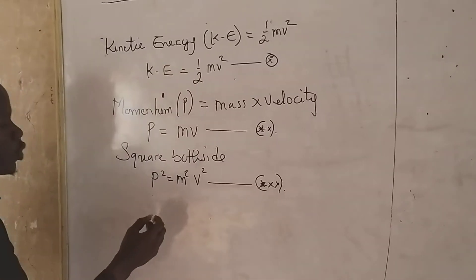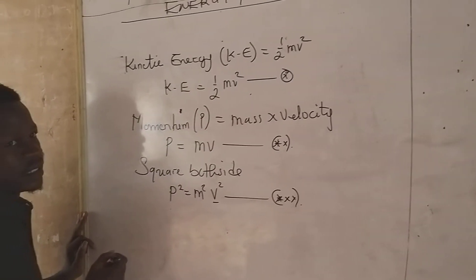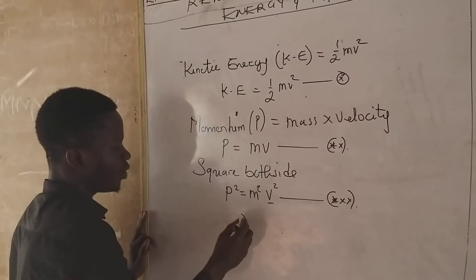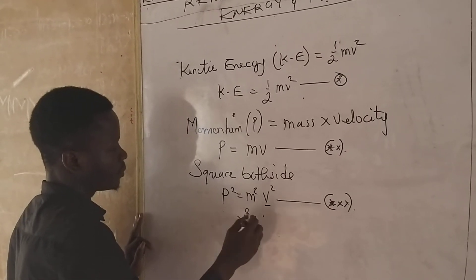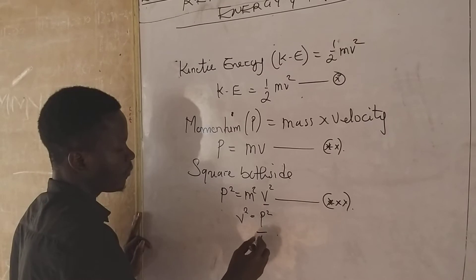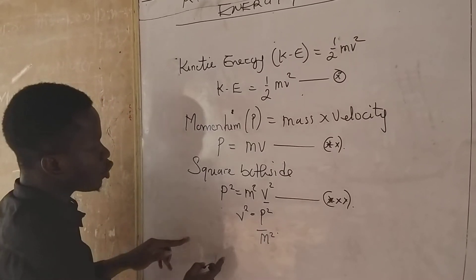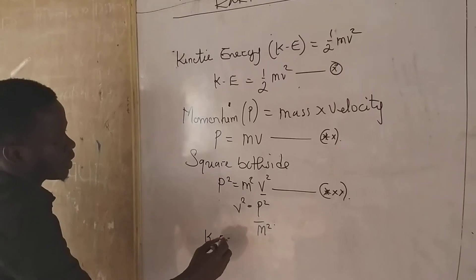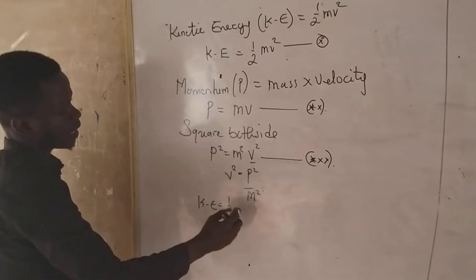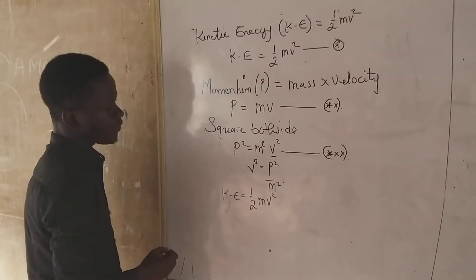From this equation, we can make velocity. We have velocity V squared to give us P squared all over M squared. From this equation, we say that kinetic energy equals half Mv squared.